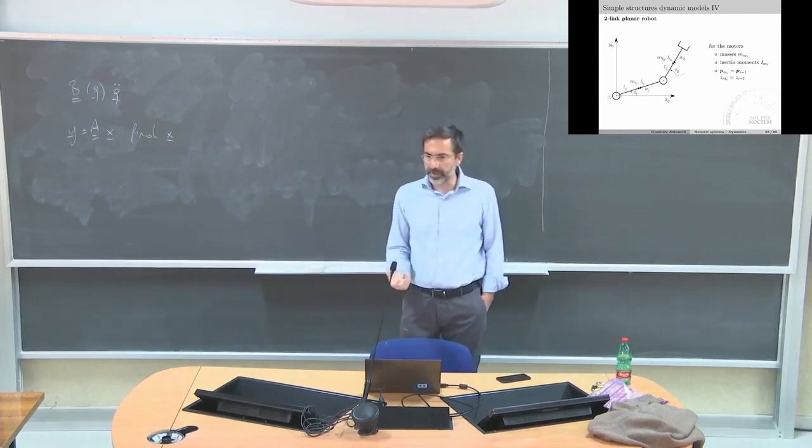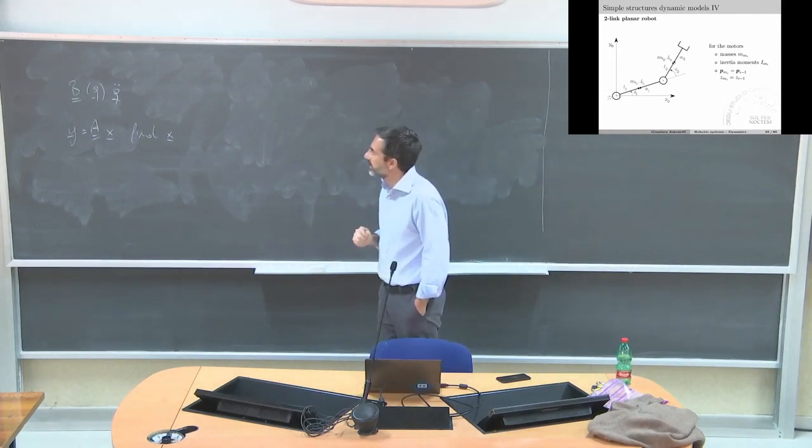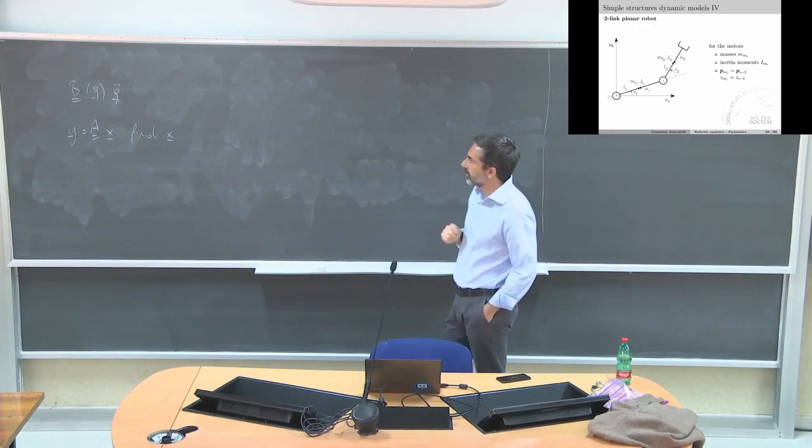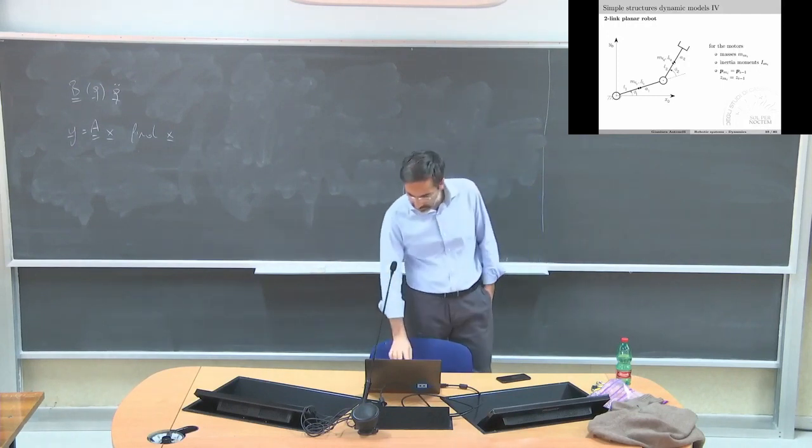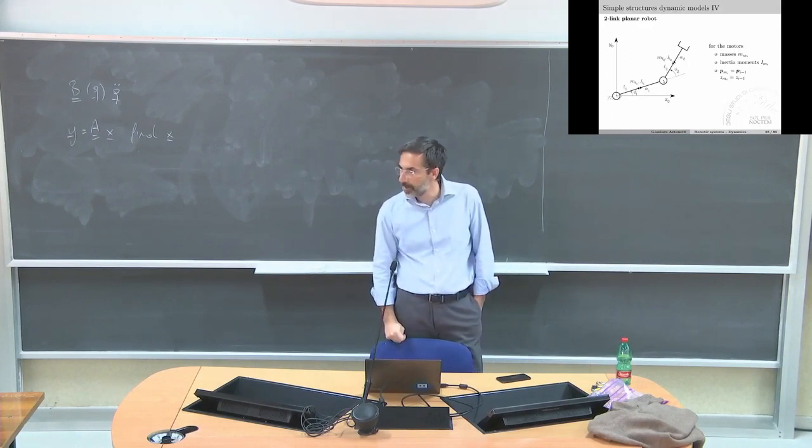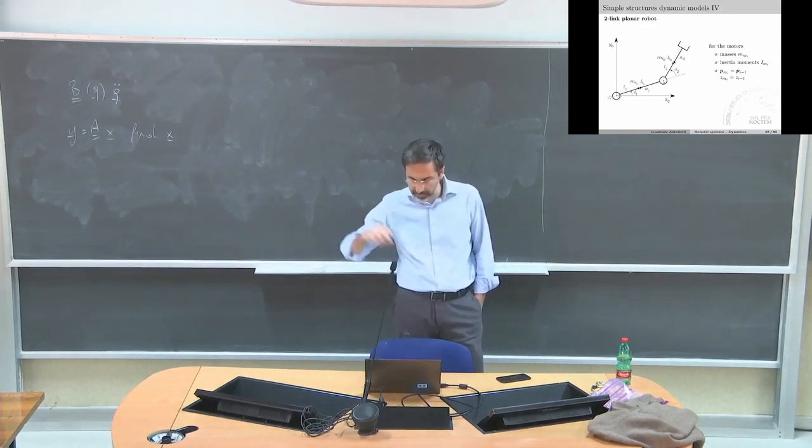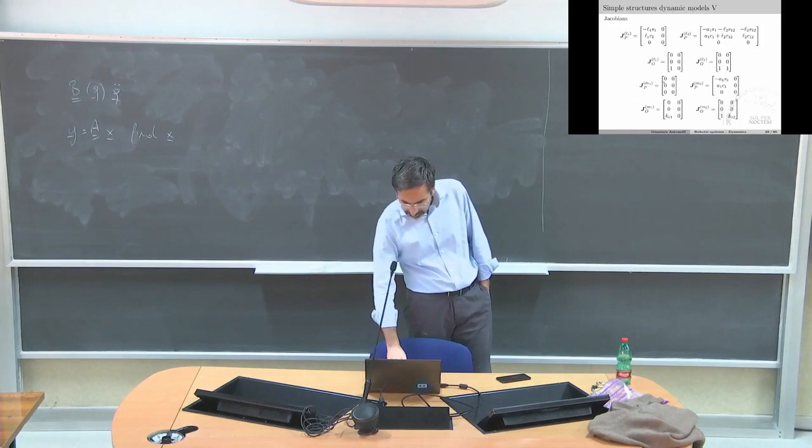The two-link planar robot, very briefly, is something that is closer to a robot. We decide that the motor position - the second motor is in P1. It means that the first motor is here in the origin and the second motor is here. The first motor is still and the second is moved around by the structure.